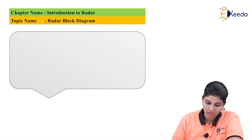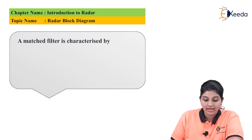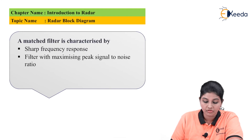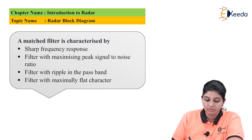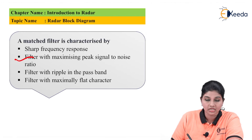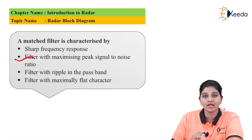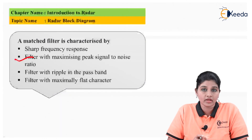The next question is: a matched filter is characterized by — a sharp frequency response filter, a filter with maximum peak signal-to-noise ratio, a filter with ripple in the passband, or a filter with maximum flat character. The correct answer is option B: a filter with maximum peak signal-to-noise ratio. Matched filters are used to provide a high signal-to-noise ratio at the output.